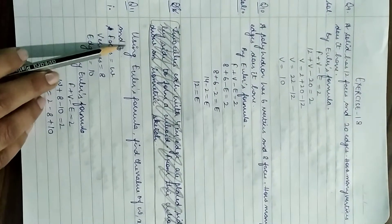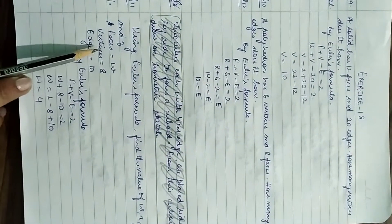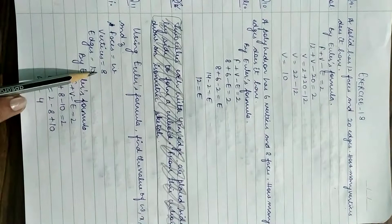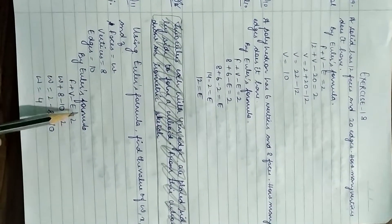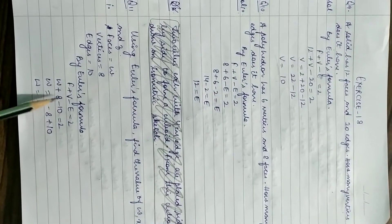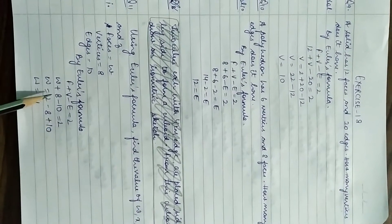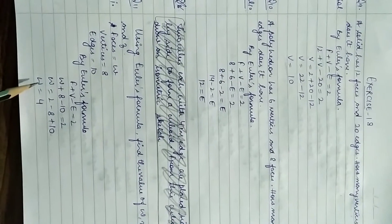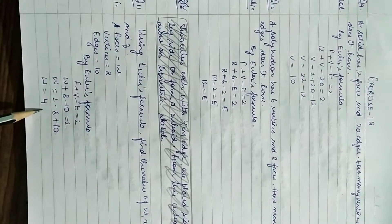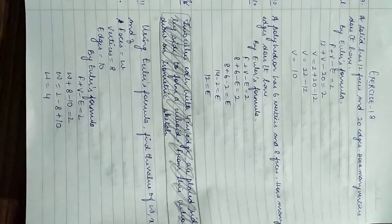Question 11: a table is given — find the values of w, x, y, and z using Euler's formula. First part: faces = w, vertices = 8, edges = 10. Substituting: w + 8 − 10 = 2, so w = 2 + 10 − 8 = 12 − 8 = 4.